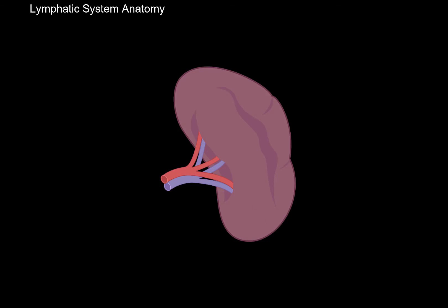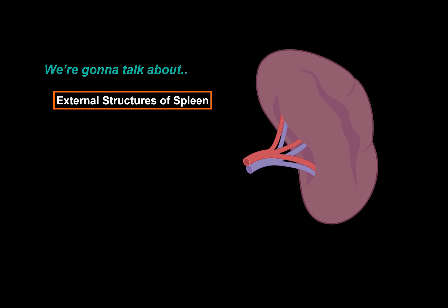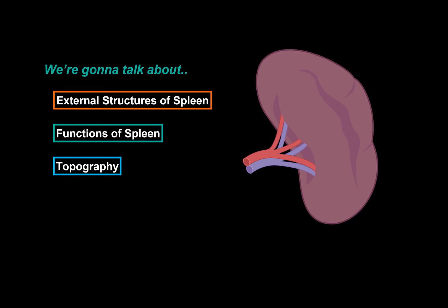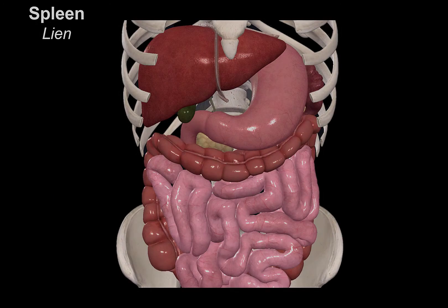What's up? Medite here. Let's talk about the spleen, which is a part of the lymphatic system. What we're going to do today is firstly cover the external structures of the spleen, then go through the basic functions and the topography, and then look at the coverings and the ligaments around the spleen. So let's start with the external structures.